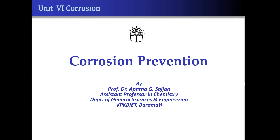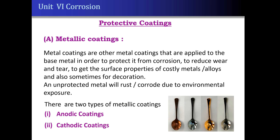In this video, today we are going to discuss about corrosion prevention methods. There are different types of corrosion prevention methods. Out of those, protective coatings are of two types: one is metallic coating and the other is non-metallic coatings.